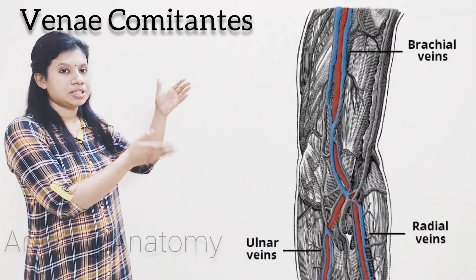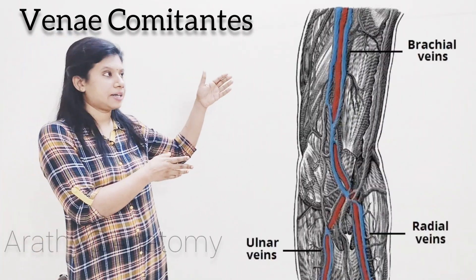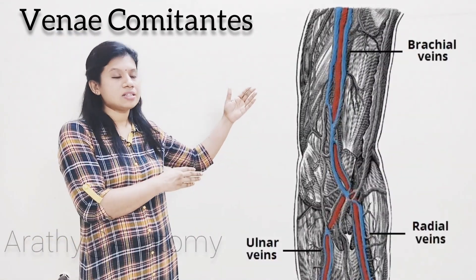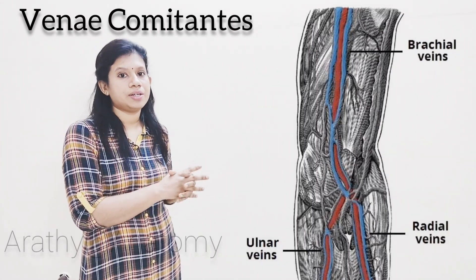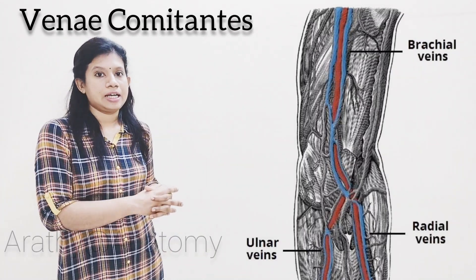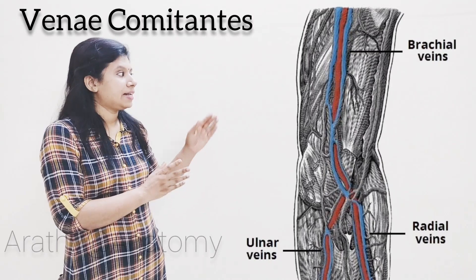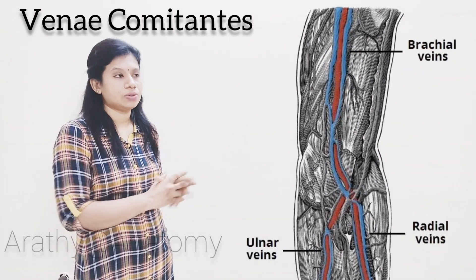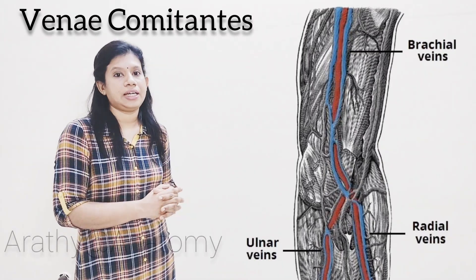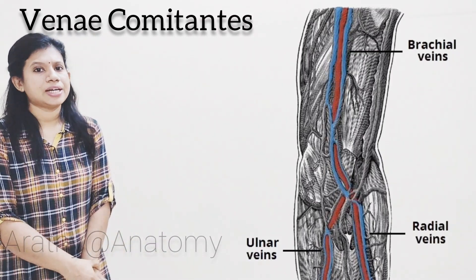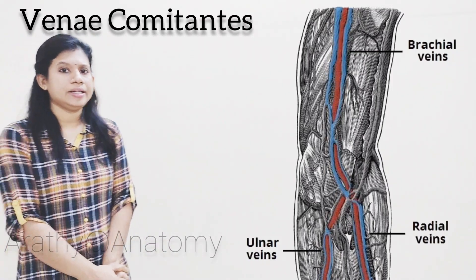The next one — what is venae comitantes? As you can see in the diagram, there are two veins, one on each side of a medium-sized artery. This can be seen especially in the limbs, and they are connected to each other across the artery. That is called as venae comitantes.